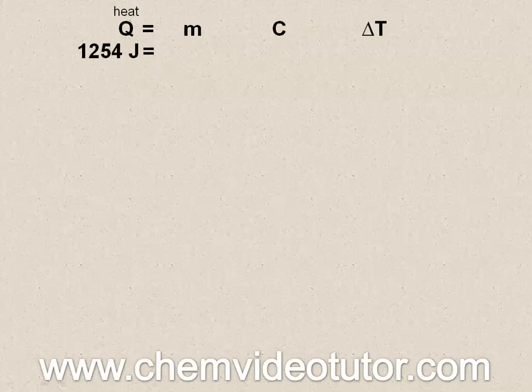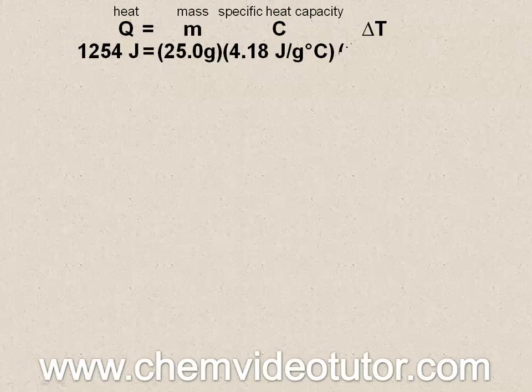In the prior video, we learned how to use the formula Q equals MC delta T to solve for Q when given a mass of 25 grams, 4.18 joules per gram degree Celsius as the specific heat capacity of water, and 12 degrees Celsius for the change in temperature.